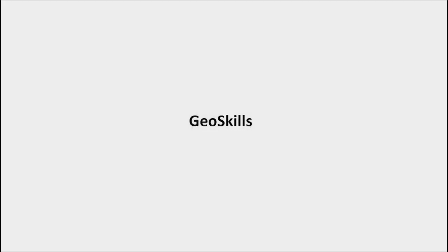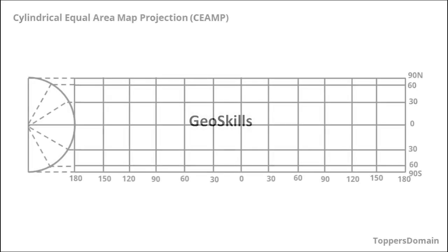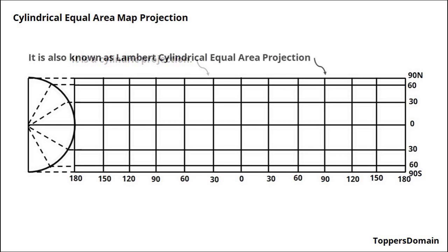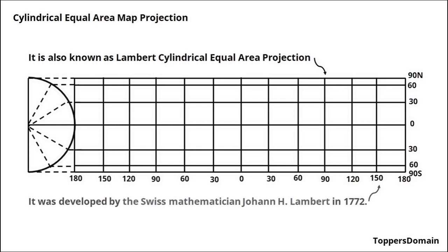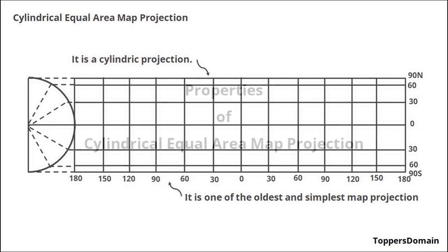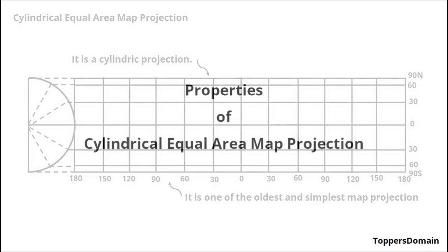Welcome back to our channel GeoSkills. Today, we are going to dive into the interesting world of map projections. Specifically, we will be exploring the Cylindrical Equal Area Map Projection, also known as the Lambert Cylindrical Equal Area Projection. This projection was developed by Lambert in 1772. It is one of the oldest and simplest map projections in cartography. So, let's get started.